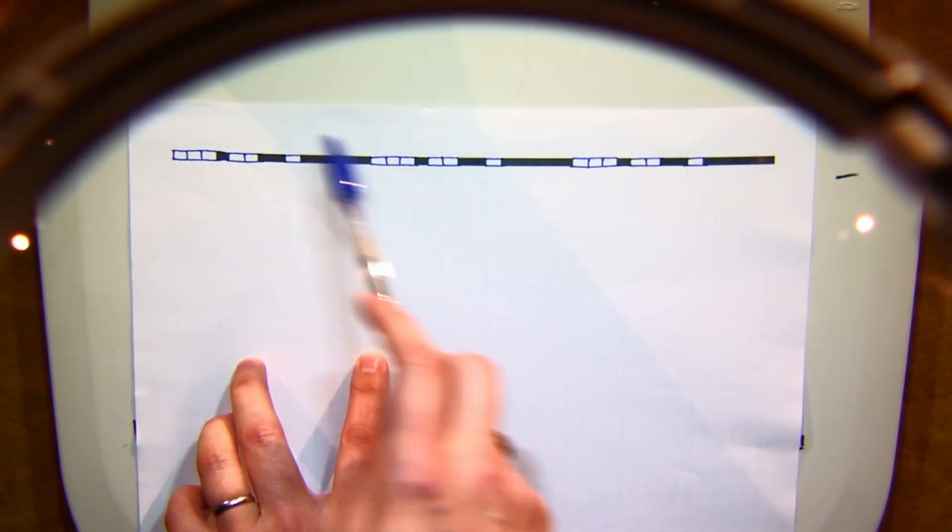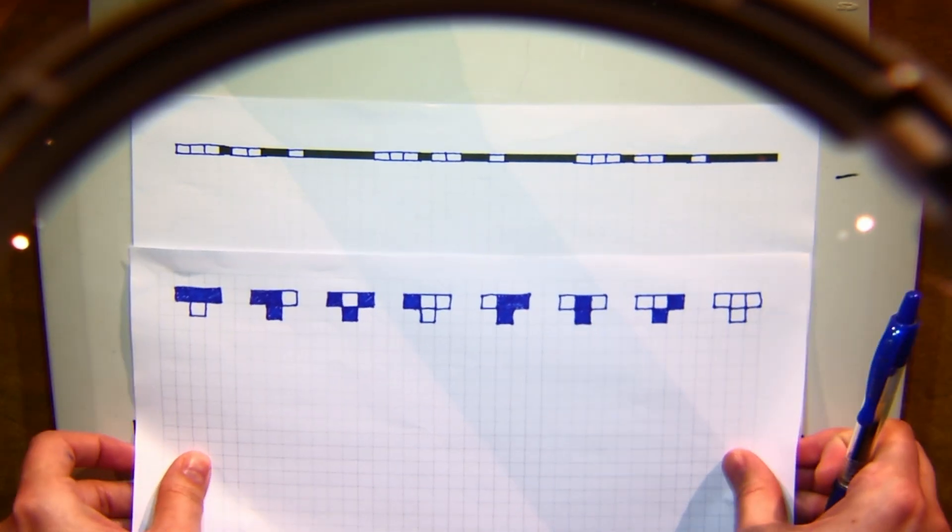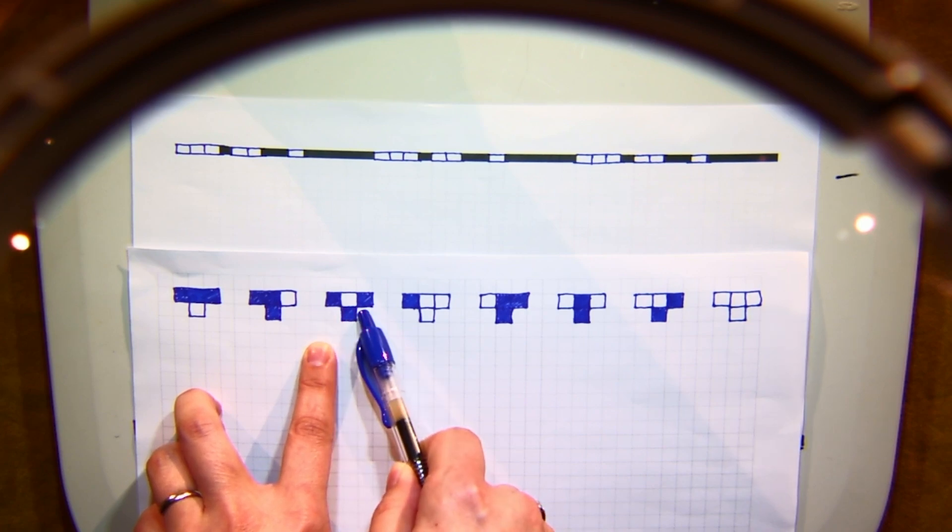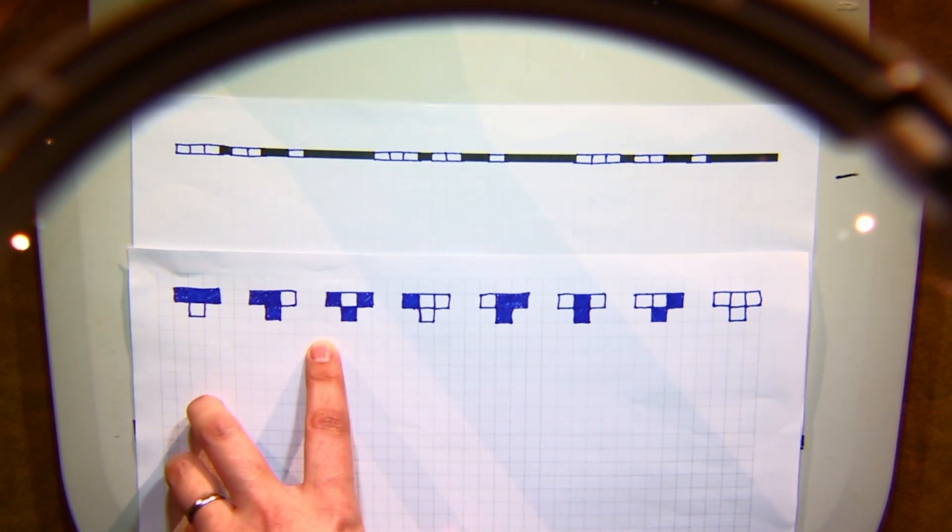So Rule 110 works in the following manner. You have an infinite strip of cells. Each cell is colored white or black. And you have a rule for turning every tick the cells turn into other cells by this rule. So each cell looks at itself and the two cells on either side of it and decides whether it wants to switch to black or white based on this rule.